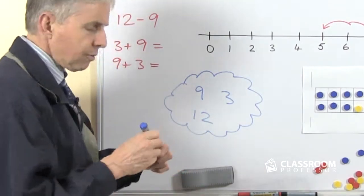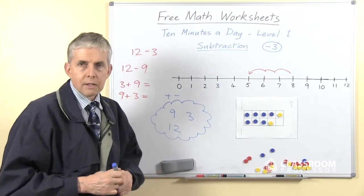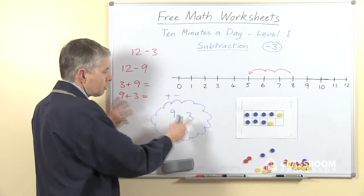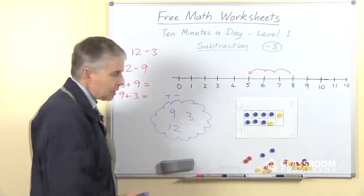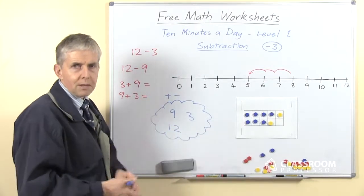9, 3, and 12 belong together for addition and subtraction. In the sense that if we add 9 and 3 in either direction we get 12, and of course, if we start from 12 and take away one of the other two, then we get the other number.